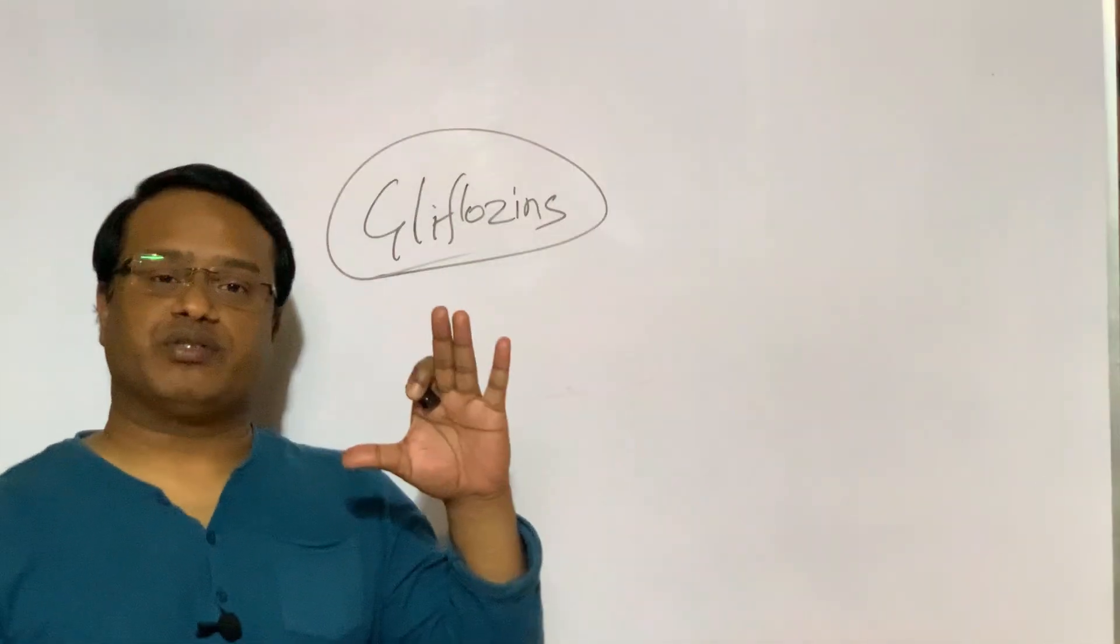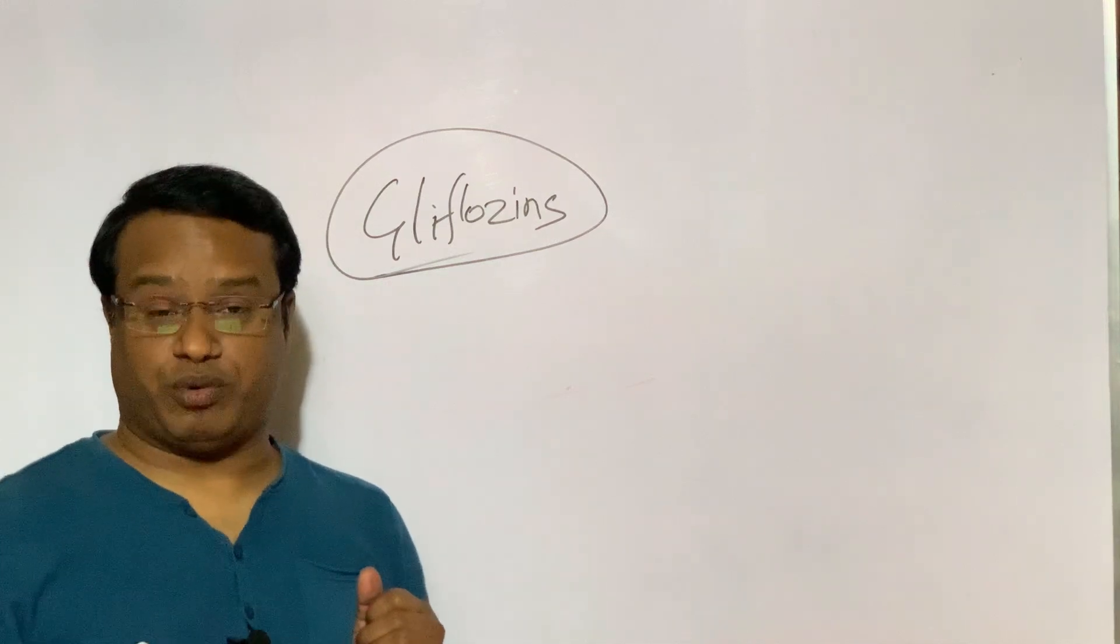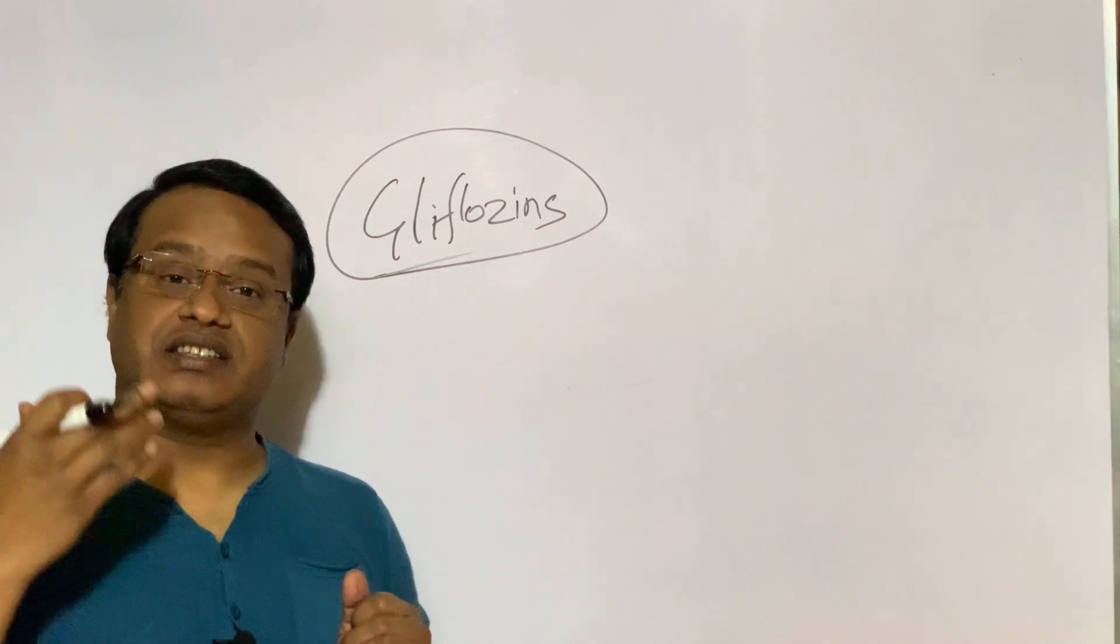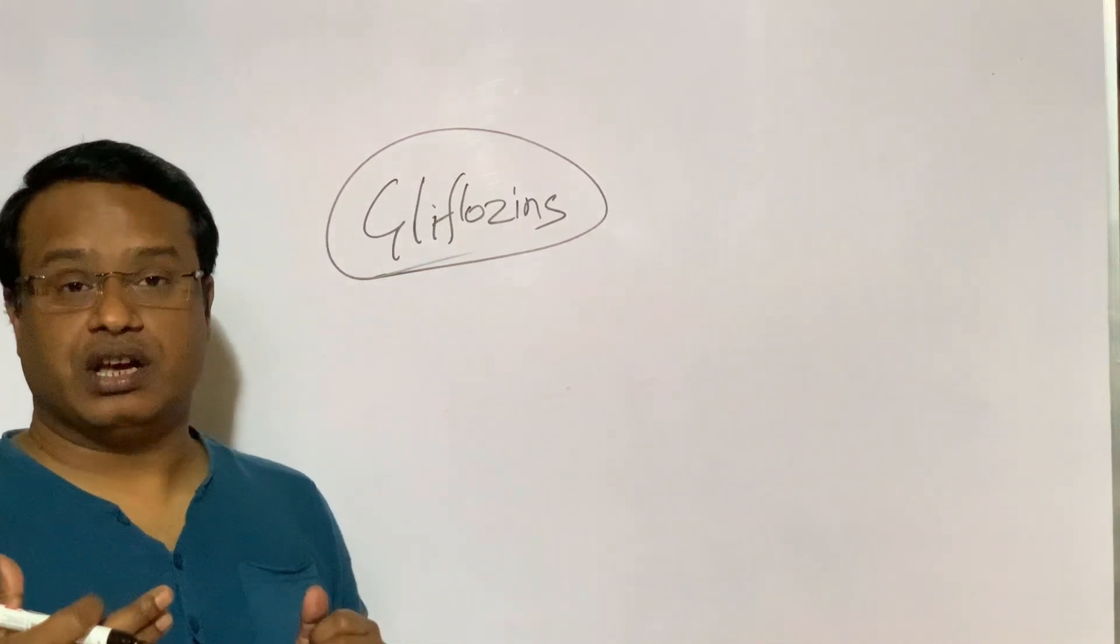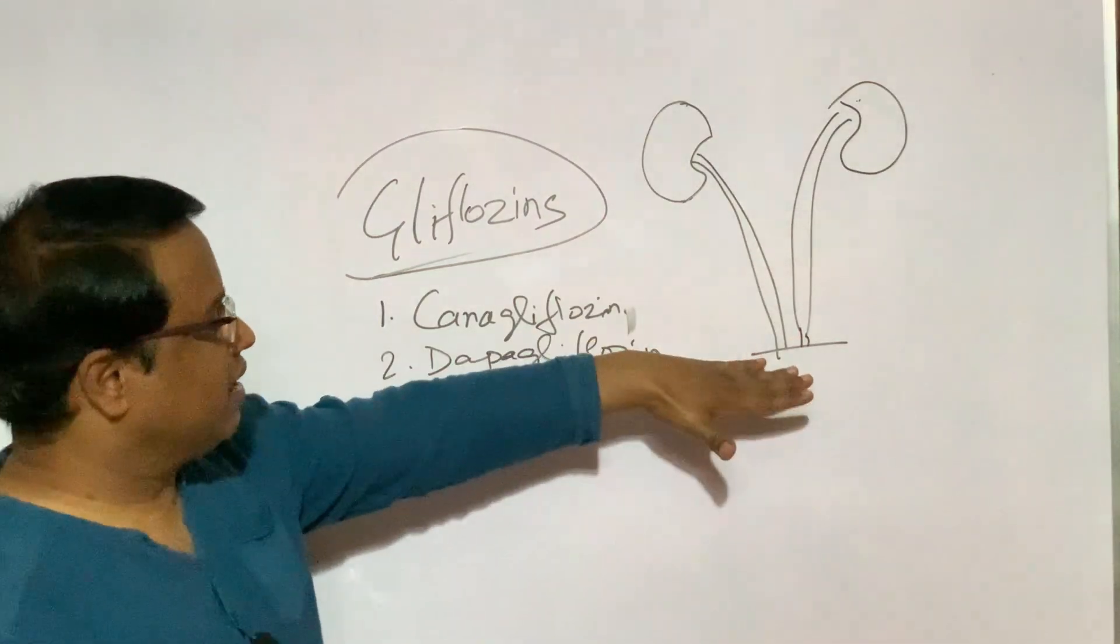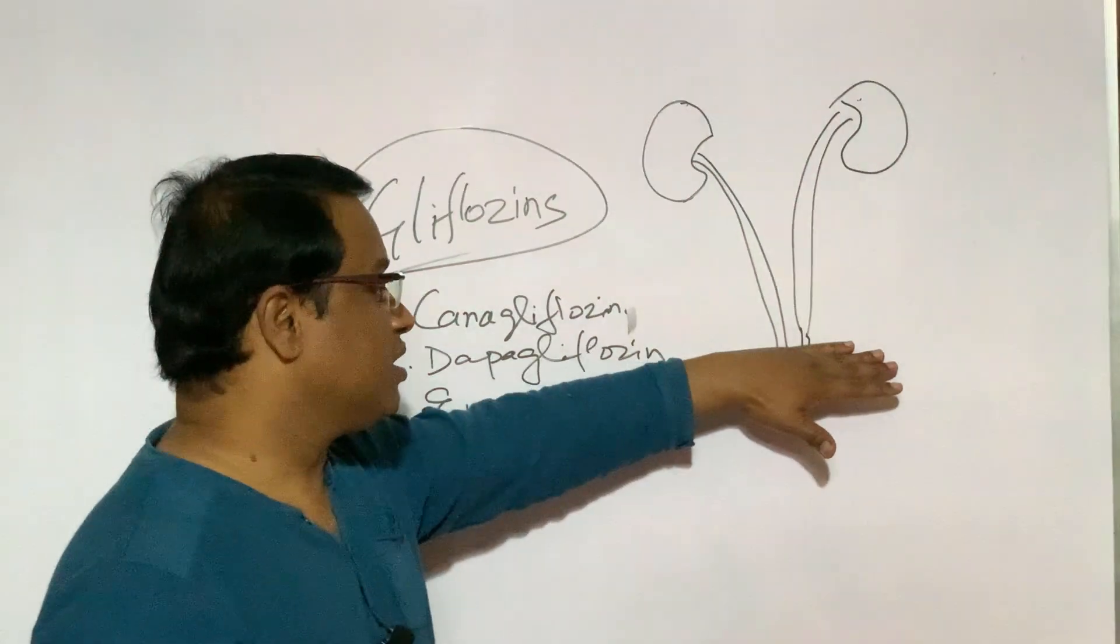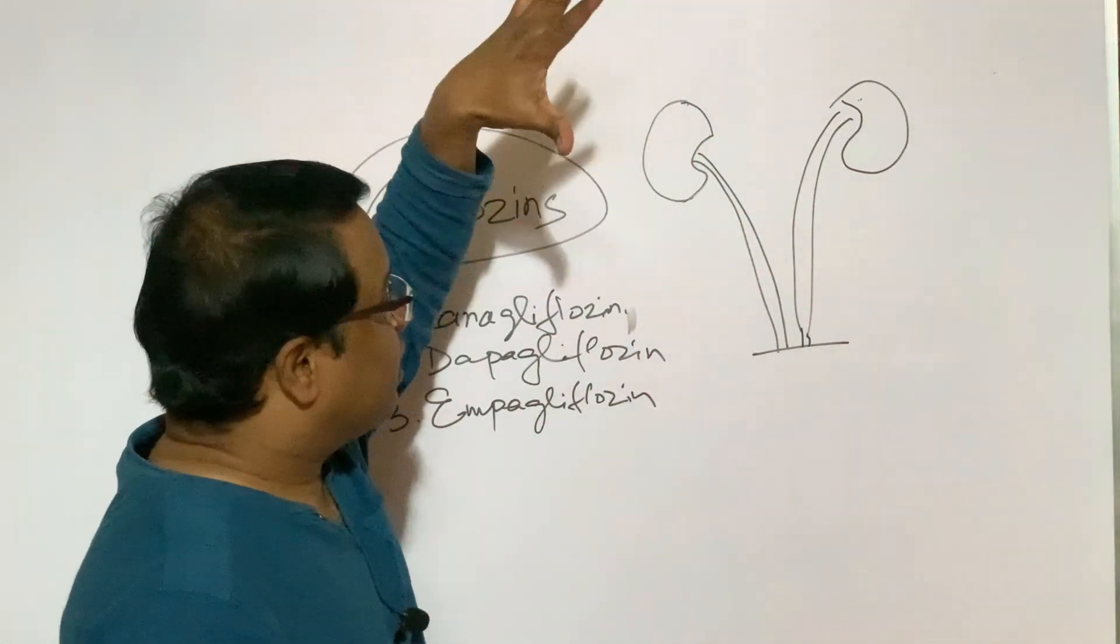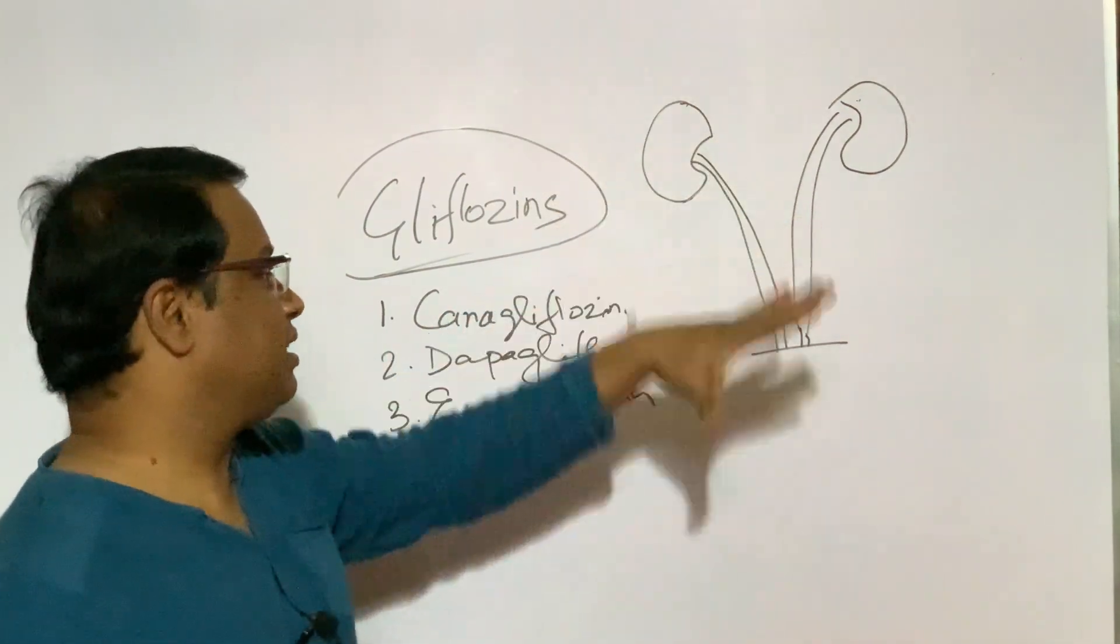They are insulin independent, that means in the action insulin is not needed. We can say in other groups of medicine like metformin, glimepiride and other gliptins, their insulin action is very much important. It acts mainly in kidney.